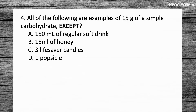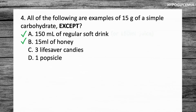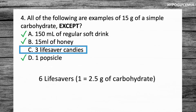Question number four. All of the following are examples of 15 grams of a simple carbohydrate, except: A, 150 mils of a regular soft drink; B, 15 mils of honey; C, three lifesaver candies; D, one popsicle. Option A — 150 mils of a regular soft drink is correct; it could also be 150 mils of juice. Option B — 15 mils of honey, or three teaspoons, is correct. Option D — one popsicle is correct. By elimination, the answer is C: three lifesaver candies is not enough — you'd actually need about six, as each lifesaver is approximately 2.5 grams.